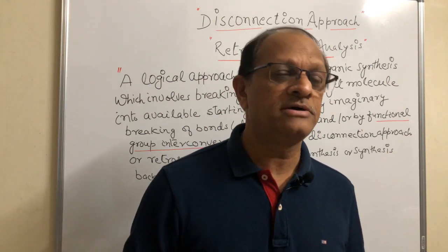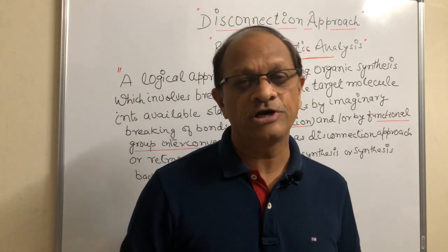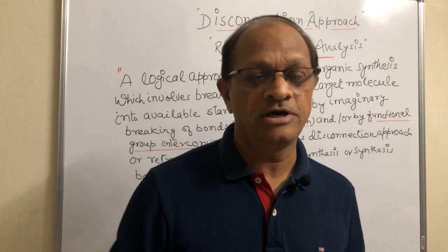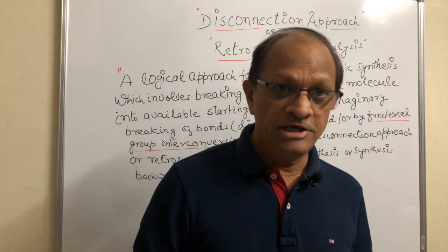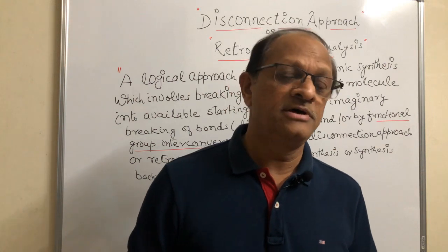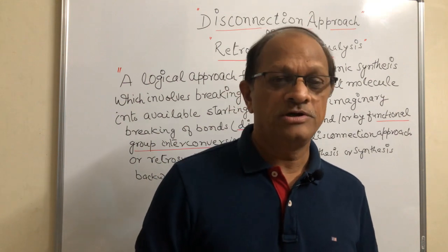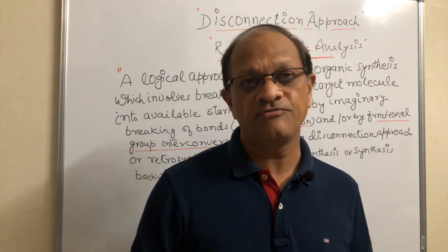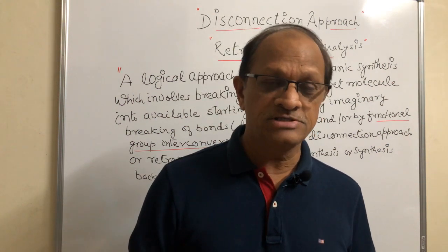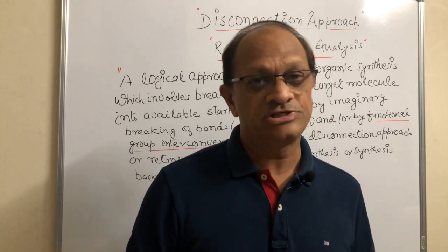वो bond ऐसा break होना चाहिए जो एक reliable reaction हो, known reaction हो, और जिससे जो एक small structure बन रहा हो उसकी yield भी अच्छी हो। इस तरह से एक small structure बनाया, उस small structure में वापिस further bonds को disconnect करते गए, और साथ के साथ जो functional group present है उन में से एक functional group को दूसरे functional group में भी convert किया गया। इन process को continue करते हुए, हम सबसे last में एक smallest structure तक पहुंचते हैं।